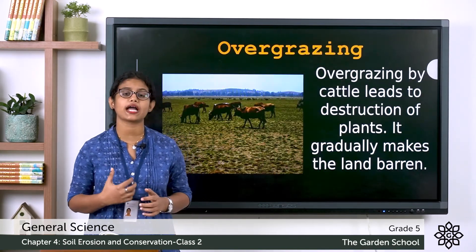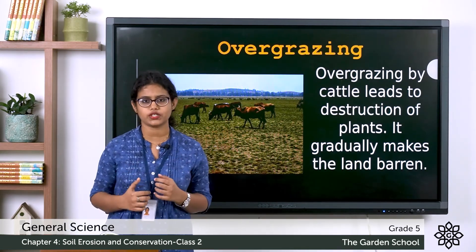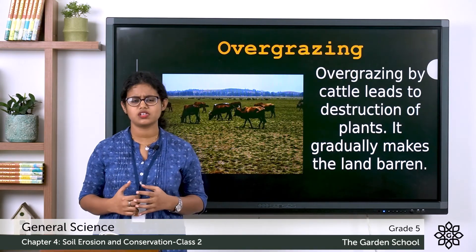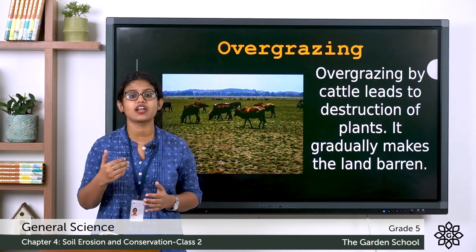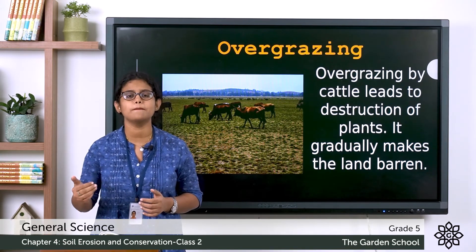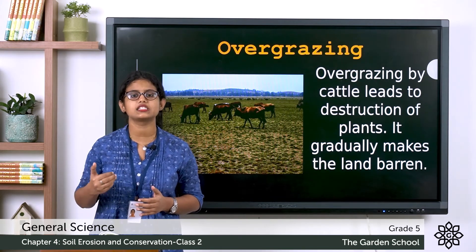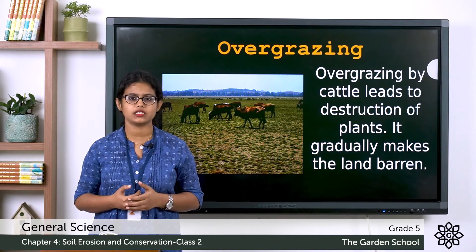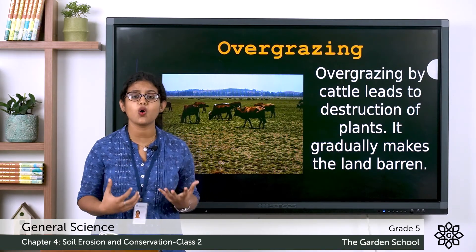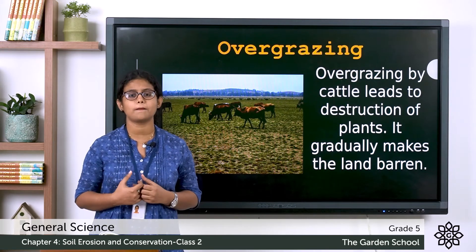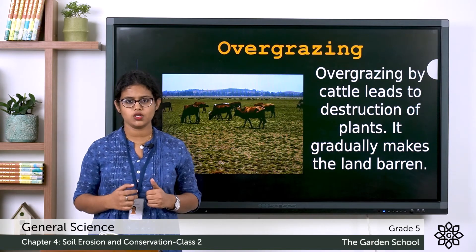Another human activity that leads to soil erosion is overgrazing. When too many animals eat grass in an area, the land gradually becomes barren. When the land gets barren, it gets exposed to heat and sunlight, and the top layer of soil gets easily washed away. Overgrazing leads to the destruction of plants, so it is also a cause of soil erosion.